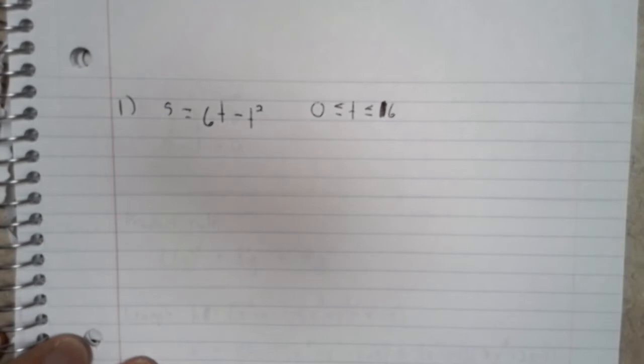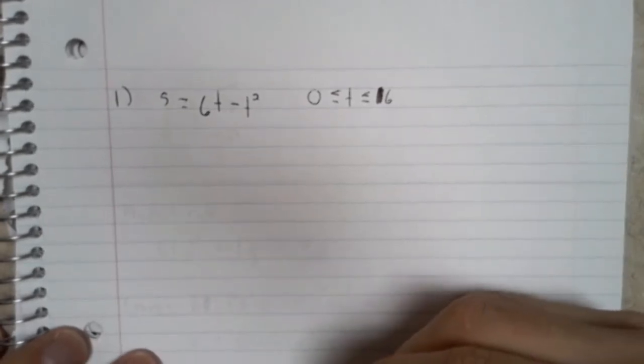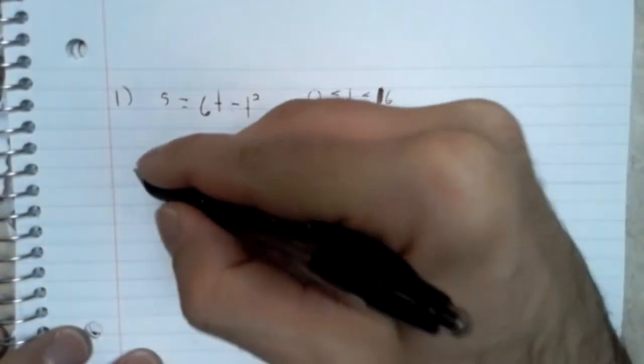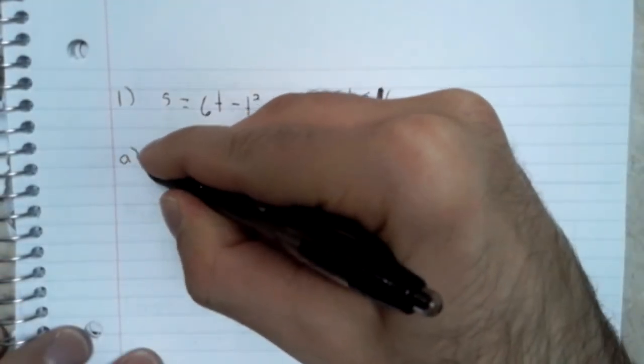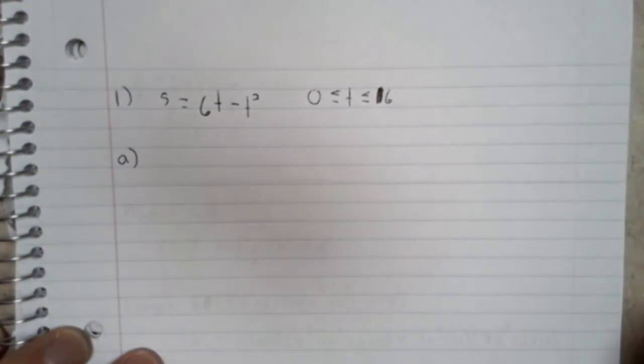So in part a, we want the displacement and the average velocity. And the displacement just tells you how far the object has moved.